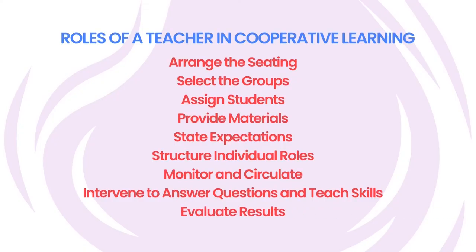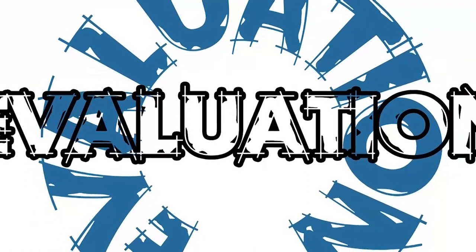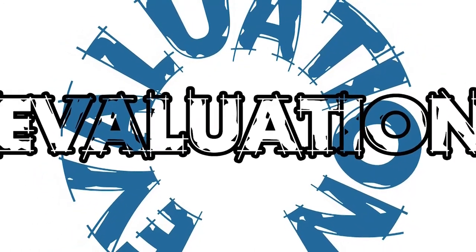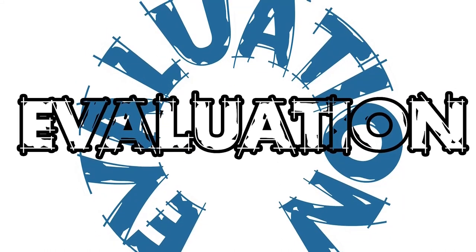Evaluate results. Evaluate each student based upon how well they learned the material, whether they completed the task, and how well they helped their group. Remember that each student receives the same grade as their group. As a teacher, our main role is to keep every student in each group actively participating. Walk around the room and constantly monitor students' progress. Give students feedback and teach them the skills they need for their groups to be a success.